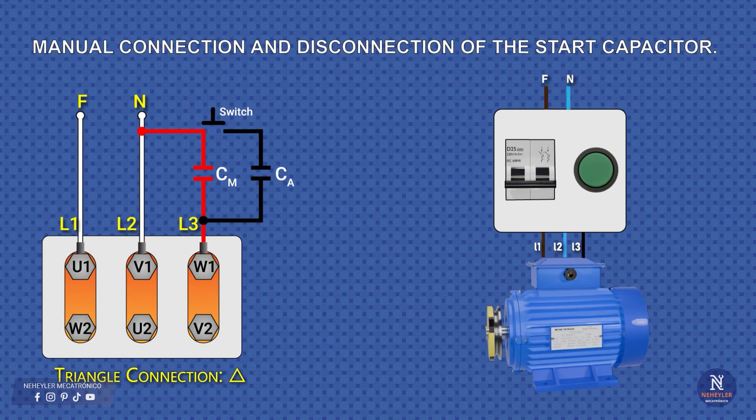For greater convenience, the capacitors, the breaker, and the push button can be placed inside a junction box or any other type of control box, and fixed near the motor. In this way, when turning it on, we have the controls at hand and it is not necessary to manipulate the wires or the motor terminal box directly.